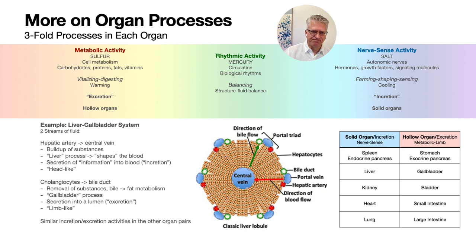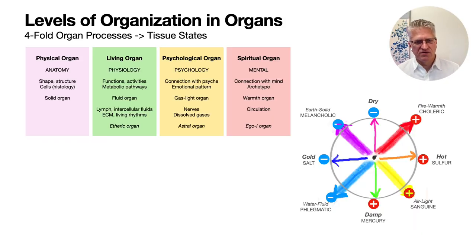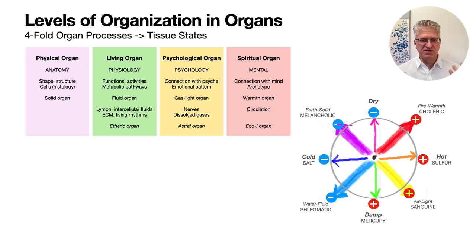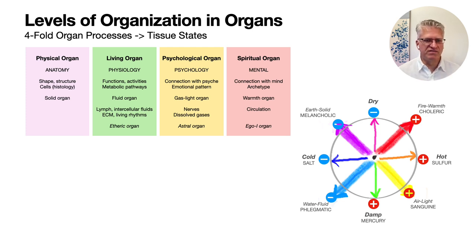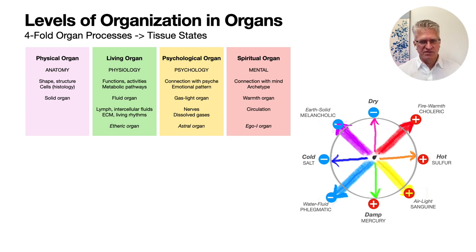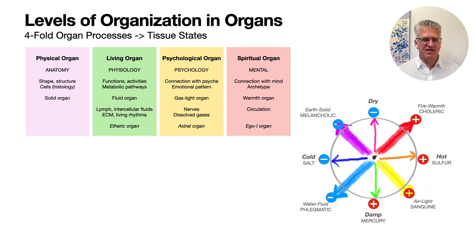Within each organ, we essentially have four levels of organization. We can discuss an organ from the aspect of its physical self - the physical organ - which is what we do typically in anatomy and down to the cells in histology. That's the solid organ, studied by cutting it up, looking in the microscope, or examining it in the cadaver lab. Then we have a life organ, which works through all the fluids of that organ - essentially tied in with the physiology of the organ, all the functions and activities that organ participates in. This works through the intracellular fluids, but also extracellular fluids in the extracellular matrix through biological rhythms. Using the more imaginative language from anthroposophy and theosophy, this is the so-called etheric organ.